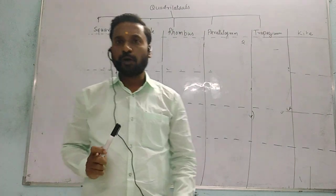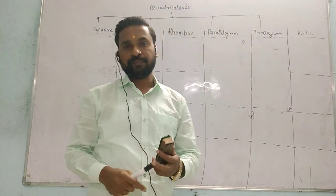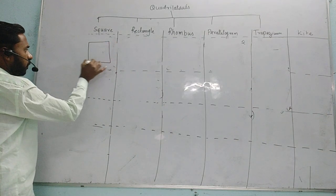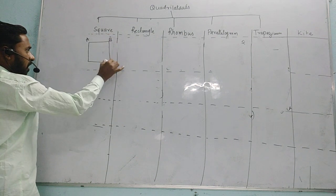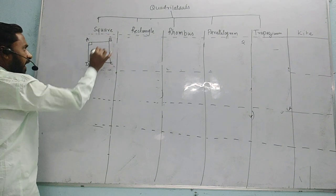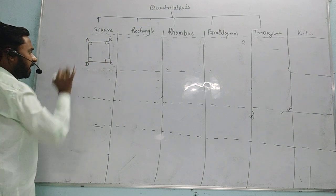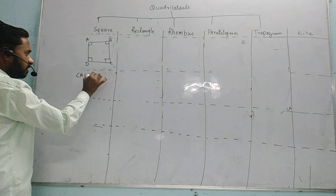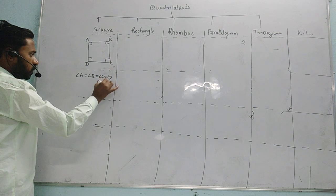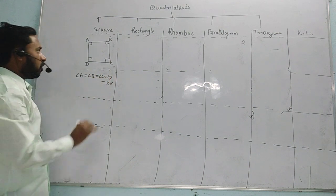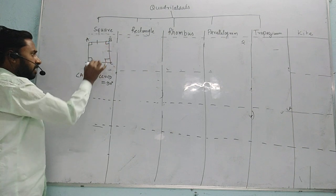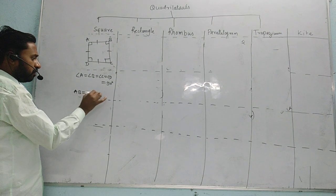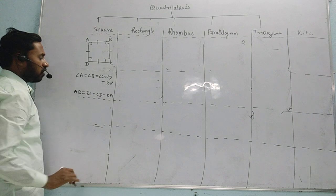Now let us see the properties of each quadrilateral one by one. The first one is square. Here ABCD is a square where all four angles — angle A, angle B, angle C and angle D — are 90 degrees each. The second important property is that all four sides — AB, BC, CD and DA — are of equal measurement.